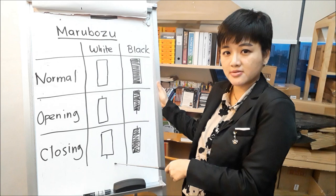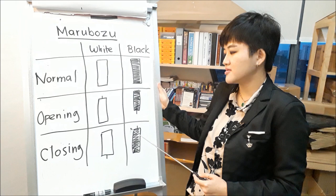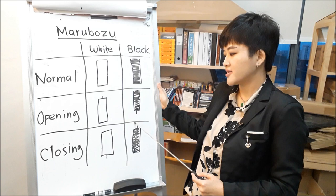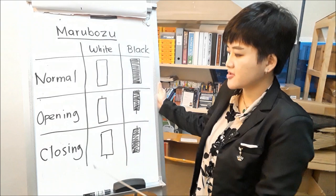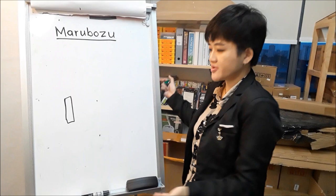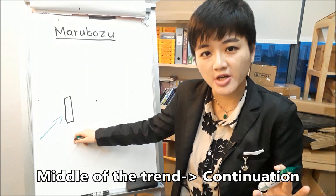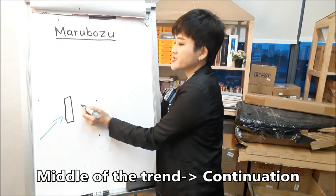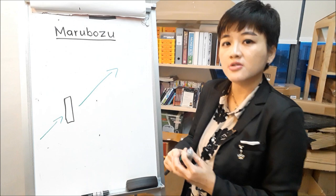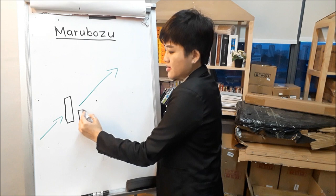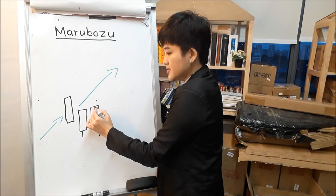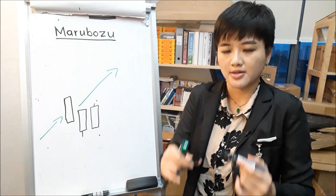How about opening black versus closing black — which one is a stronger bearish signal? The answer is the closing black. So, will these patterns cause the price to go up or down? For a bullish Marubozu, if it appears in the middle of an uptrend, it is a continuation pattern — this means price is going to continue to go up. The same applies to opening white and closing white. If you see any of these patterns in the middle of an uptrend, it tells you that price is going to continue to go up.